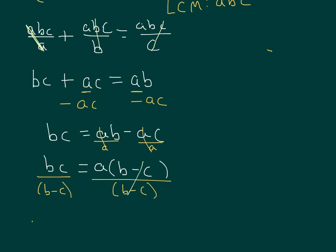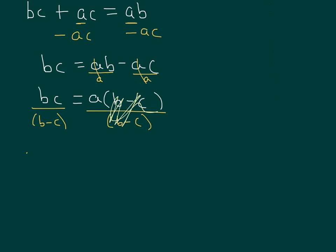And over here, these are going to cancel out. And we're left with, on the left-hand side, BC over B minus C equals A.